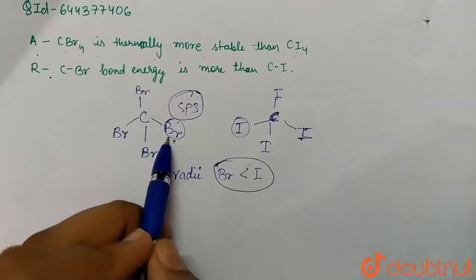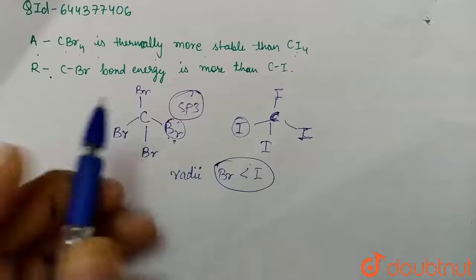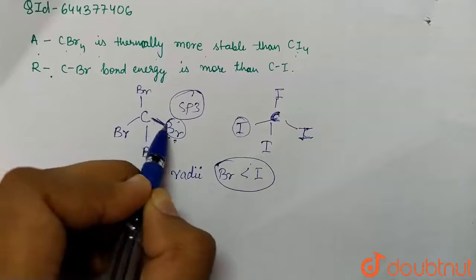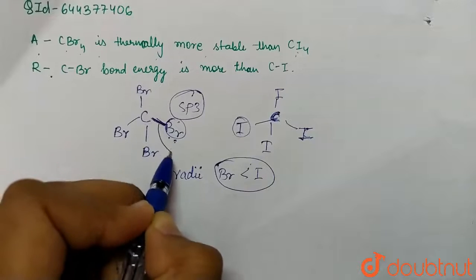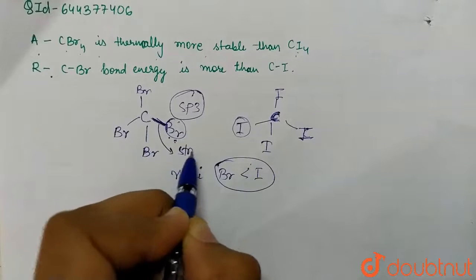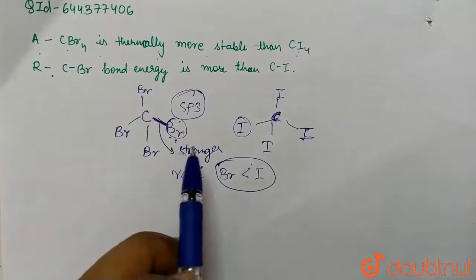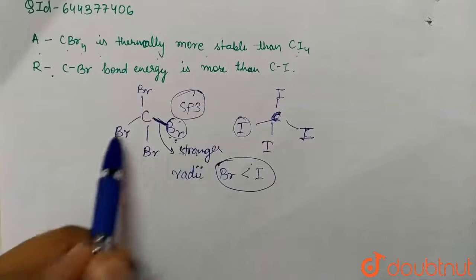Since bromine has a smaller size than iodine, this bond will be shorter. And since this bond will be shorter, this bond will be stronger.